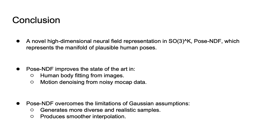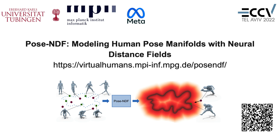In conclusion, we present a novel high-dimensional neural field representation for learning the human pose manifold, which can be used as a prior and improves the state-of-the-art in downstream tasks such as pose estimation from images and motion denoising. Pose NDF is not limited by Gaussian assumptions, produces much more diverse and realistic poses, and also produces smoother interpolation. For more details, code, and models, please visit our project webpage.